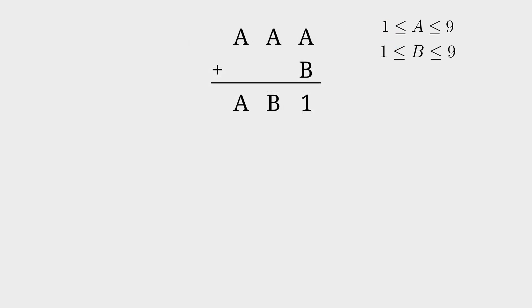We can start off by saying this A plus this B is 1, but this is not possible because the lowest value that A plus B can have is 2, because 0 is not in the range given.